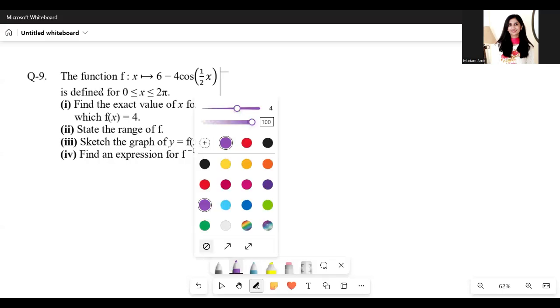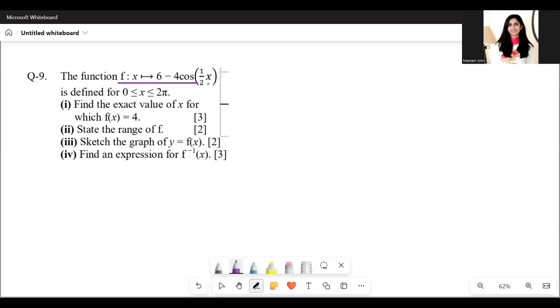This question gives the function f(x) = 6 minus 4 cos half x, with domain from 0 to 2 pi. We have to find the exact value where f(x) equals 4. Okay, let's do that.